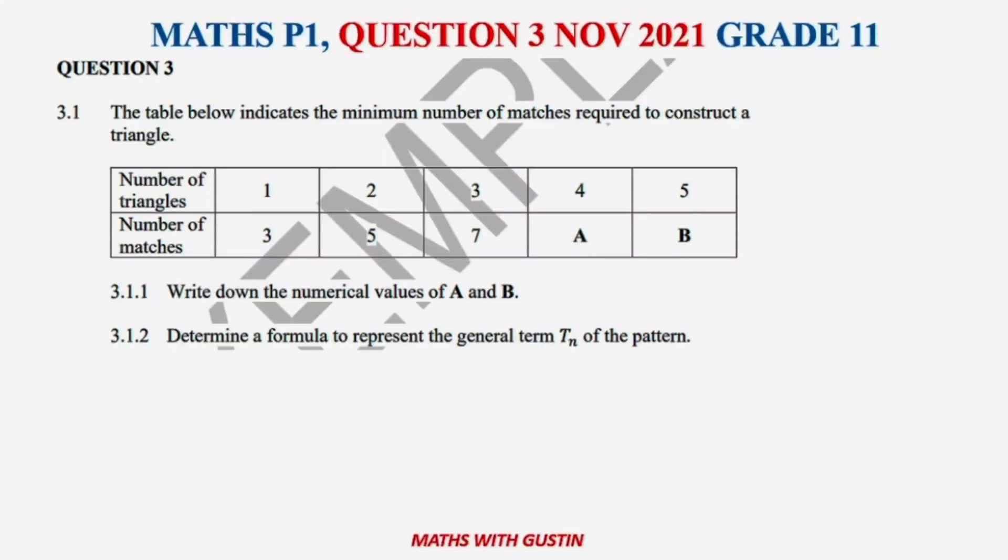What's up everyone, welcome to question 3, November 2021 Maths Paper 1 Grade 11. It was a sequence and series or number pattern question which consisted of 3.1 and 3.2.